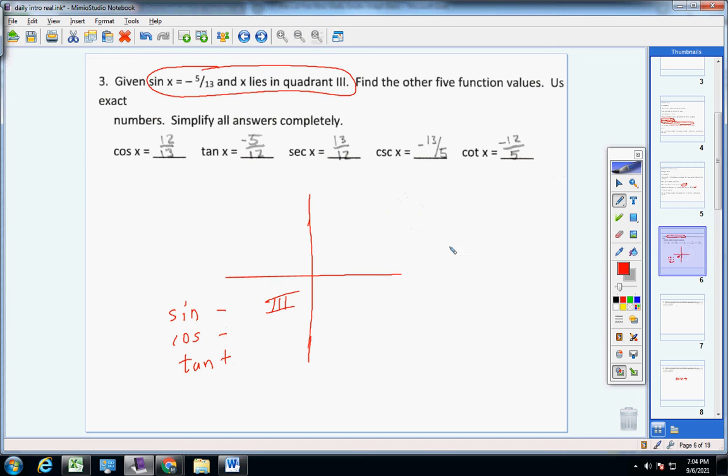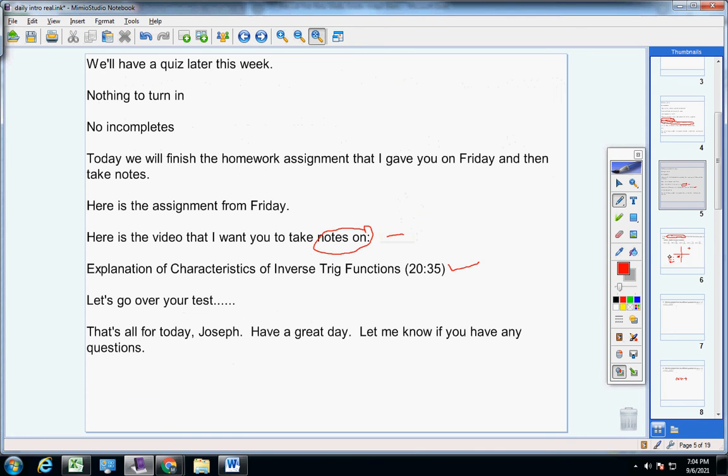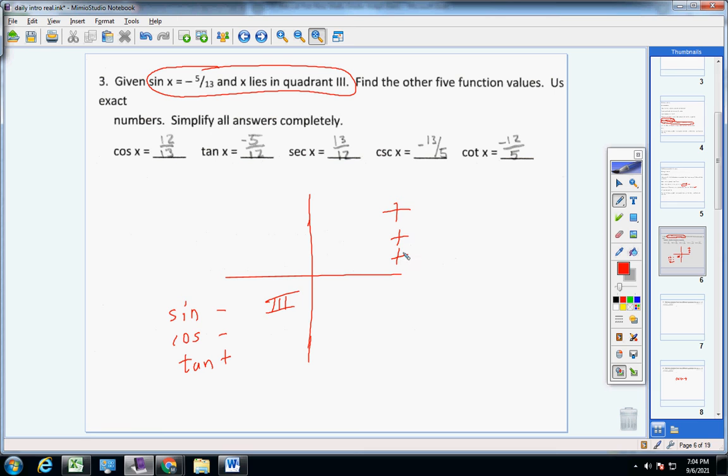Positive, positive, positive. Sorry about that. Positive, negative, negative. Negative, positive, negative. So right here, this is your sign sequence. So sine should be negative. Cosine should be negative. Tangent should be positive. Secant should be negative. Cosecant should be negative, and it is. That's fine. And cotangent should be positive.